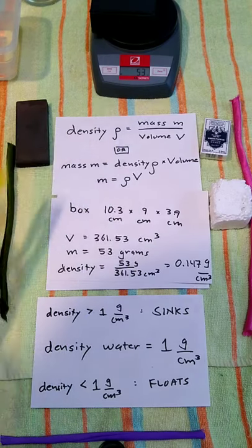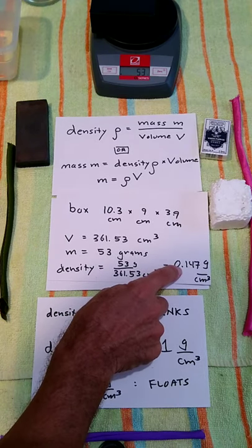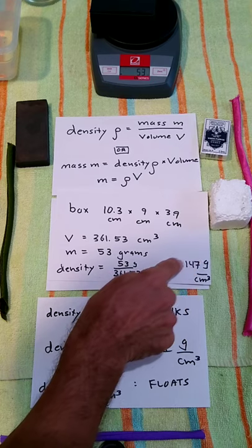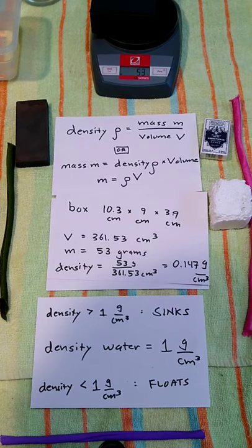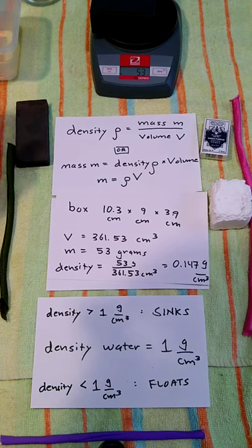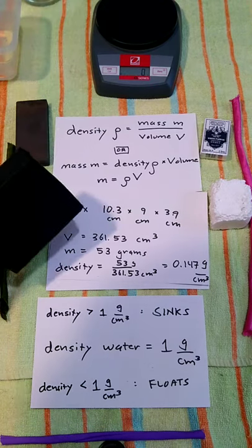If I take the mass of the box, 53 grams, and divide by the volume of the box, I'll get that the box has a density of 0.147 grams per cubic centimeter.